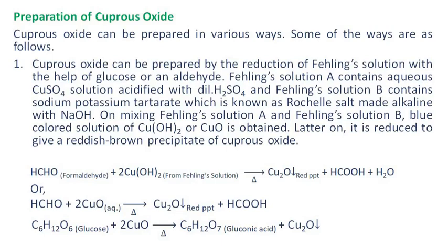Fehling's solution A contains aqueous copper sulfate solution acidified with dilute sulfuric acid, and Fehling's solution B contains sodium potassium tartrate, which is known as Rochelle salt, made alkaline with sodium hydroxide. On mixing Fehling's solution A and Fehling's solution B,